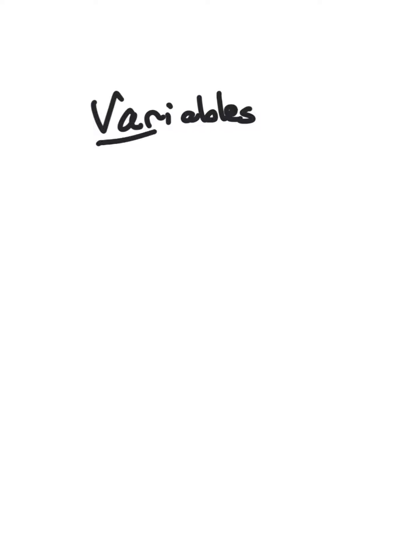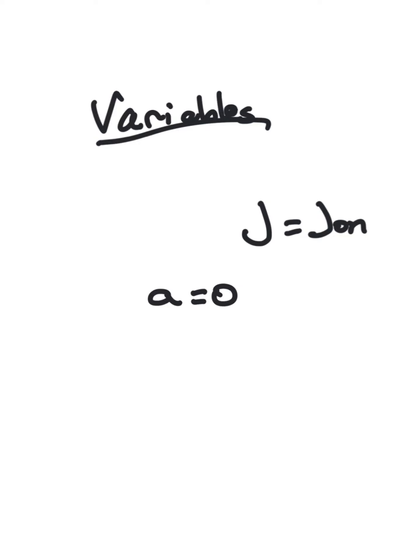Variables mean that something stands for something else — like an abbreviation. For example, 'j' might stand for 'John' if we all agree on that. In math, you have to have some agreement about it. I could say a stands for zero, so anytime within that situation you see an a, it stands for zero. If x stands for two, then anytime you see an x, it stands for two.